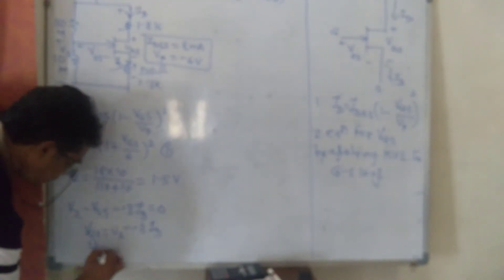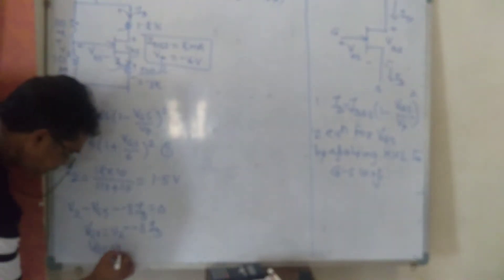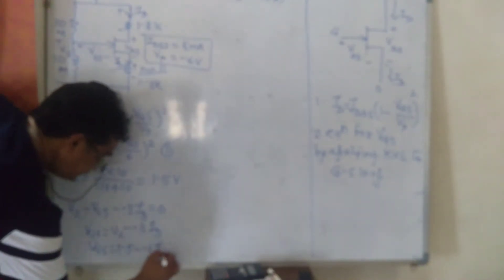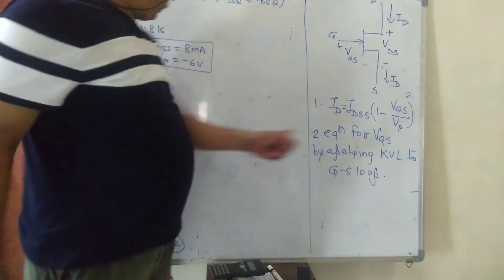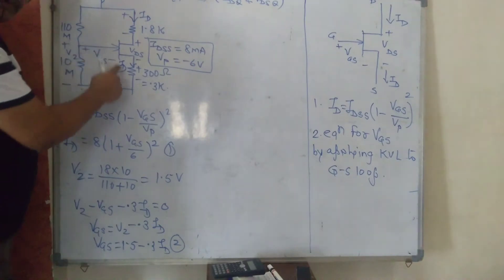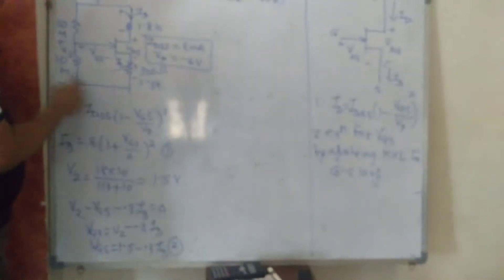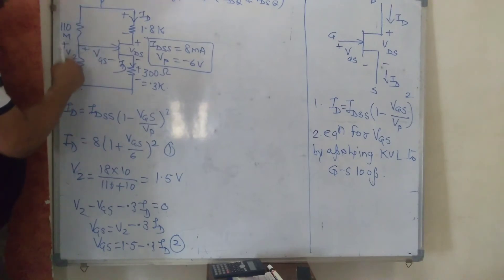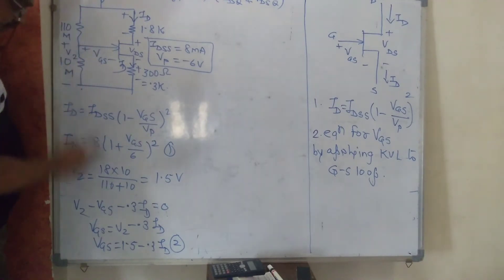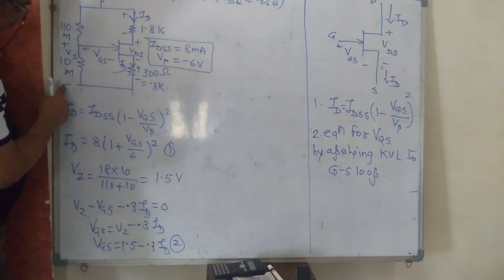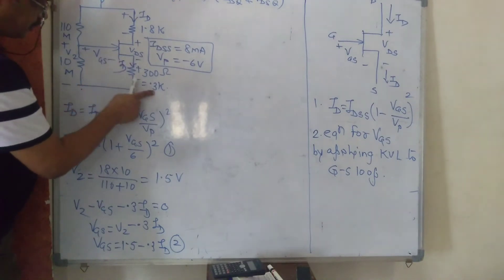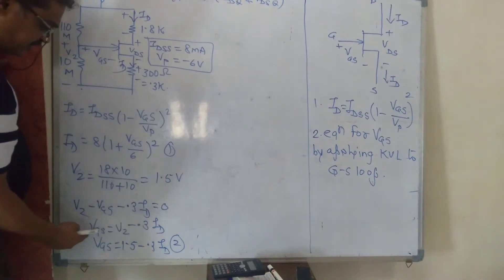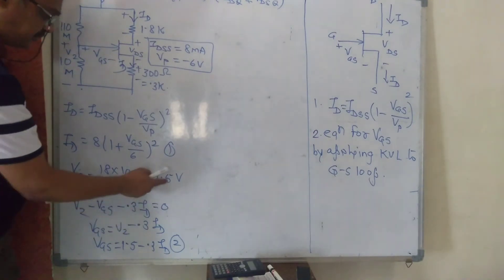So VGS = V2 − 0.3·ID. To summarize: equation 1 is the fixed equation. Equation 2 is obtained by applying KVL to the gate-source loop to get an expression for VGS. I calculated V2 using the voltage divider: V2 = (18 × 10) / (110 + 10) = 1.5. Going around the loop: plus V2, minus VGS, minus 0.3·ID = 0, giving VGS = V2 − 0.3·ID.